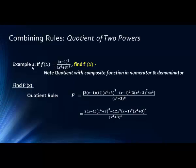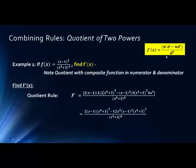Now we have another problem — a quotient rule, but kind of the opposite. We have a quotient where both the numerator and denominator are composite functions raised to powers. This is probably one of the most complicated examples. If you want, write the problem and try to solve it on your own before continuing.